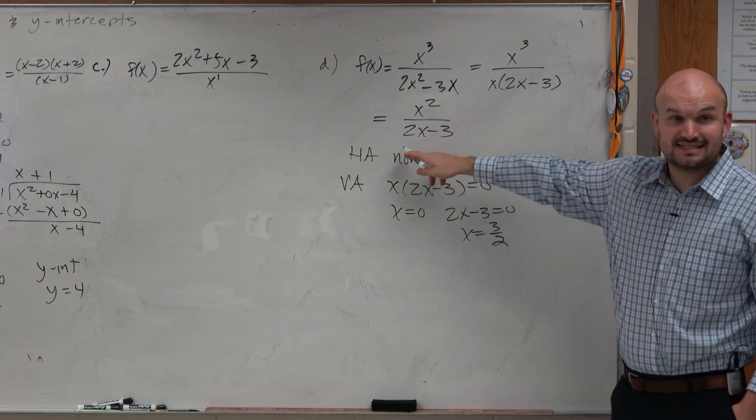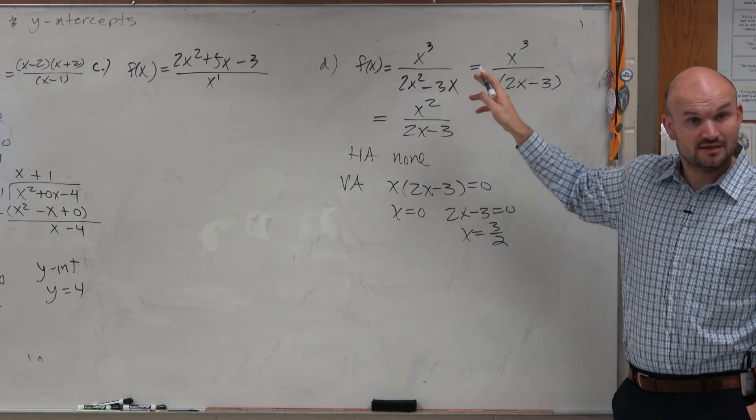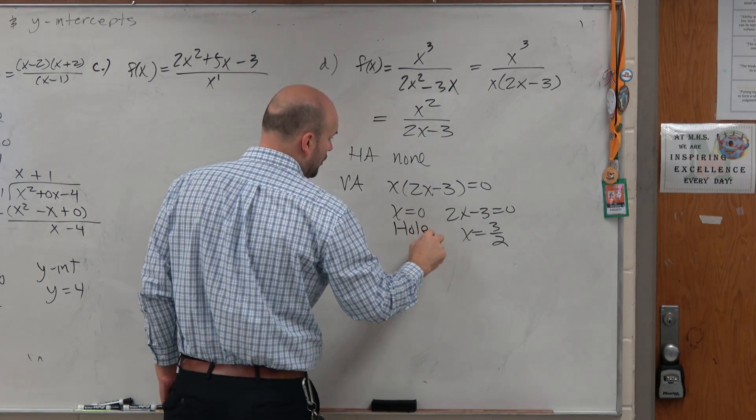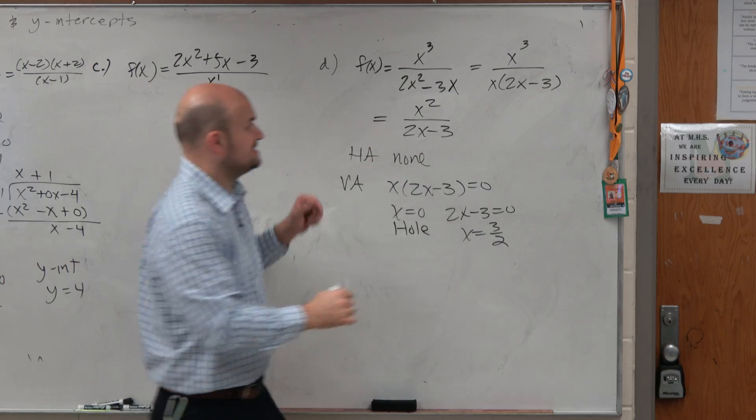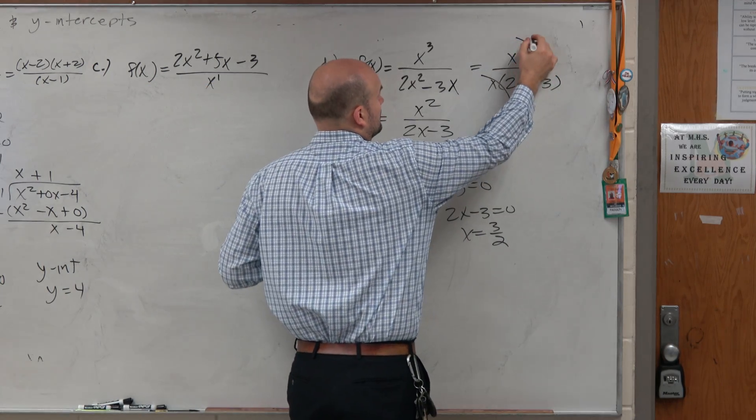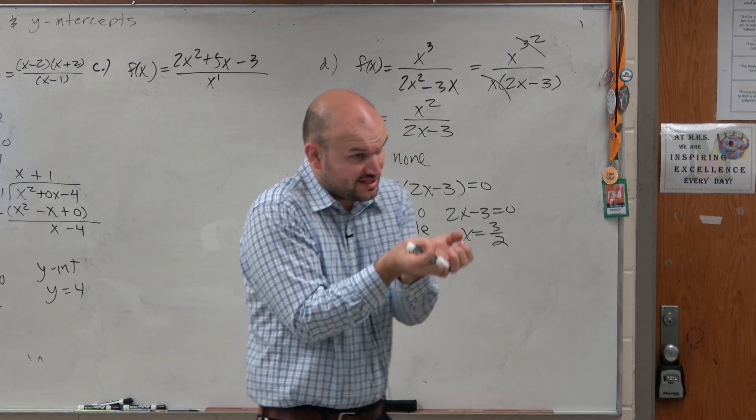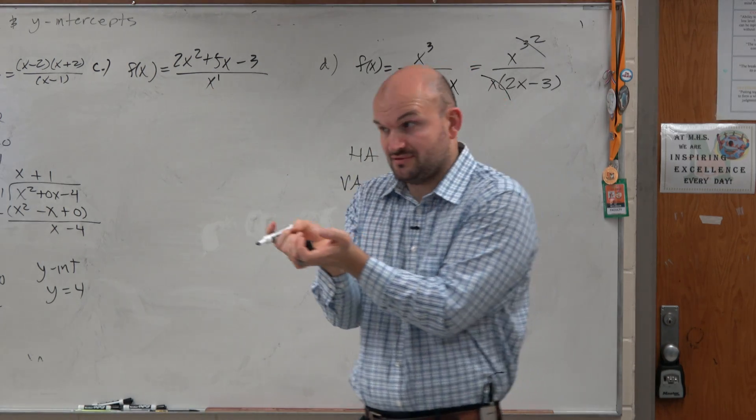However, the x got simplified, right? So that is not a vertical asymptote. That is actually a hole. Because the x's got divided out. So remember, when something gets divided out, it's a hole, not a vertical asymptote. That was from chapter 1.